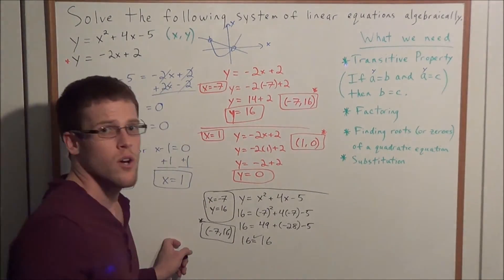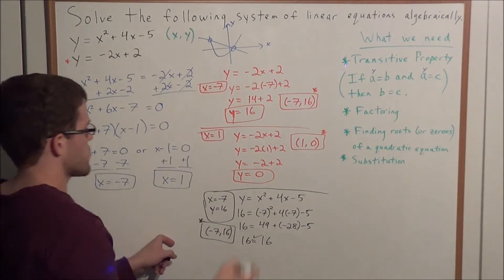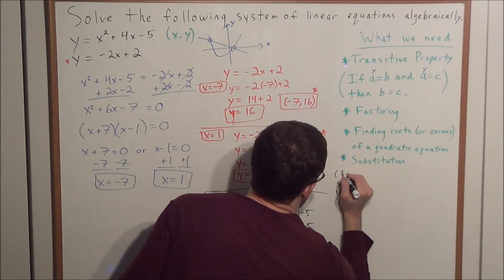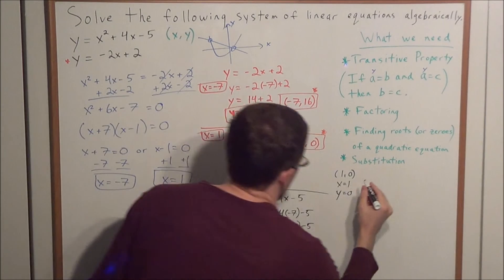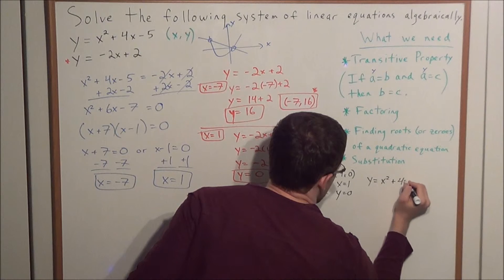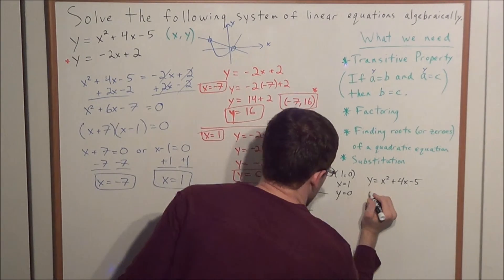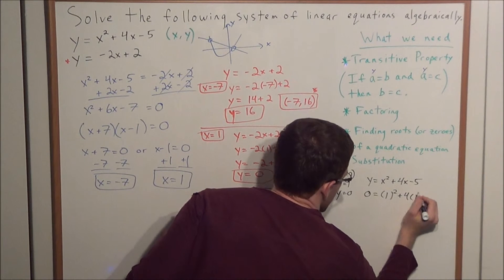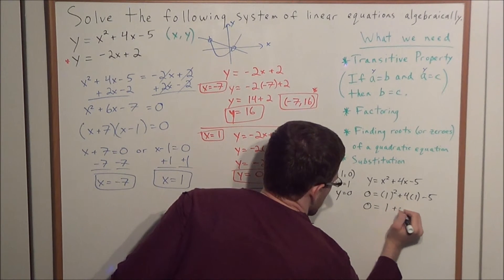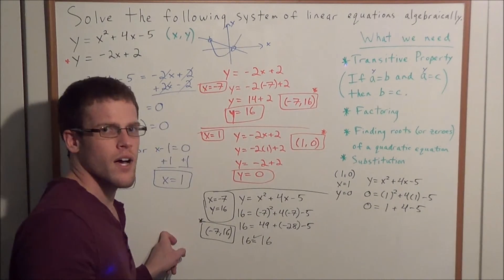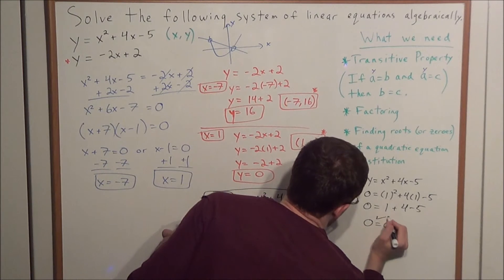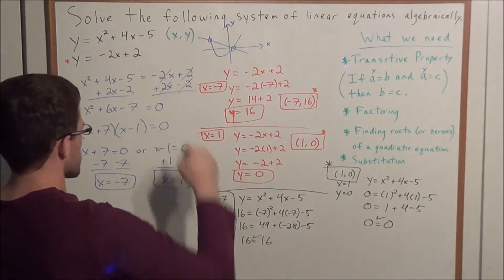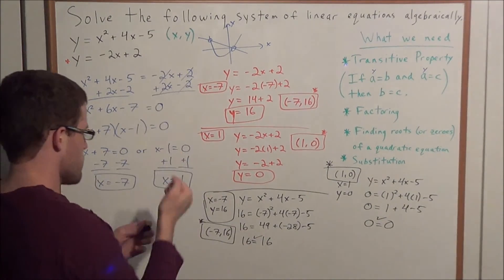Next, let's check the point 1, 0 in y equals x squared plus 4x minus 5. With x equals 1 and y equals 0, we get 0 equals 1 squared plus 4 times 1 minus 5, which is 1 plus 4 minus 5. That gives 5 minus 5 equals 0, so 0 equals 0, which checks. This confirms that 1, 0 is a solution to both equations, as is negative 7, 16.